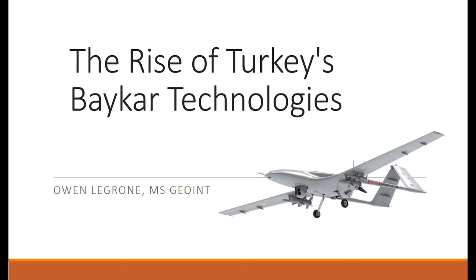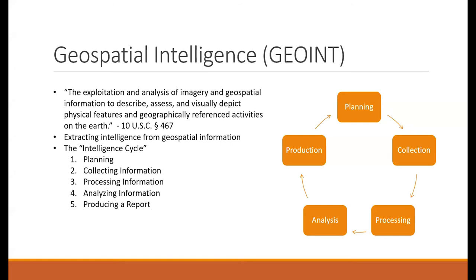What is geospatial intelligence? Very succinctly, it is the practice of extracting useful intelligence from geospatial data of different kinds. That often takes the form of satellite imagery, but it can also take the form of many other kinds of geospatial data, including data often stored within a GIS. Geospatial intelligence is often thought of as a cycle, and I've chosen to organize this presentation around that cycle — from the planning stage to the production stage, where I produced my final product through the National Geospatial Intelligence Agency's TearLine program.